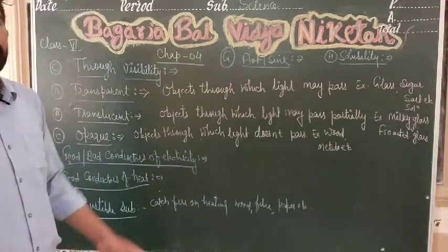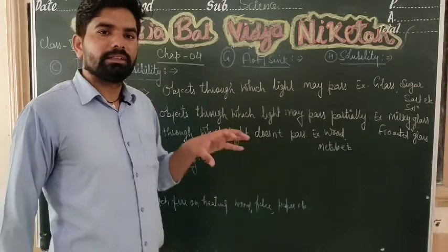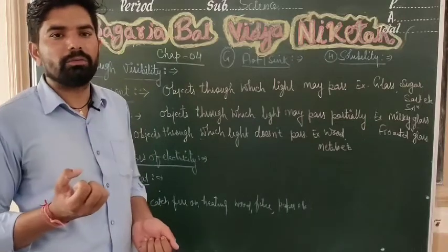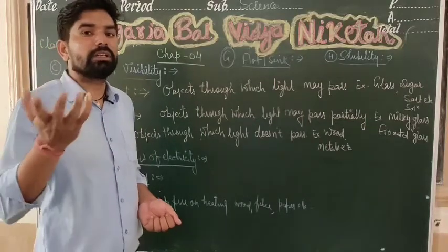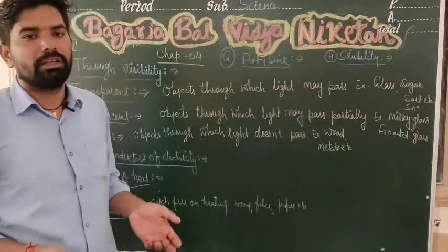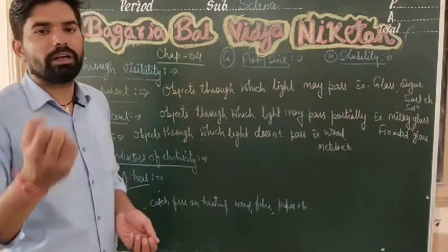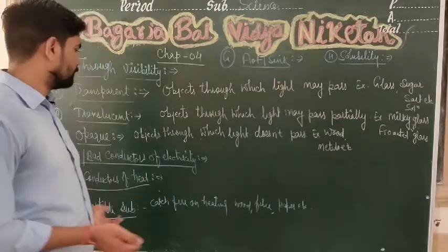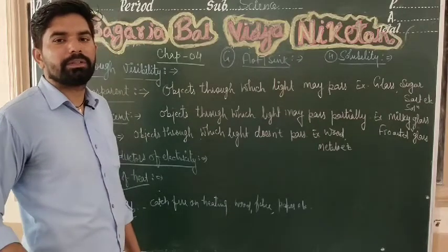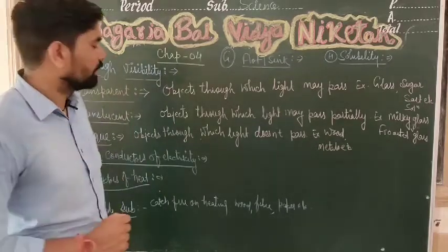The next property is combustibility. Combustible substances are those that catch fire on heating. When these substances receive heat, they catch fire. Examples of combustible substances include wood, fibers, and paper — when they get heat, they catch fire.